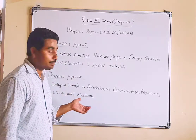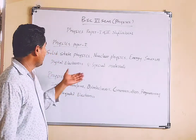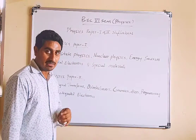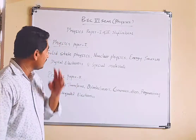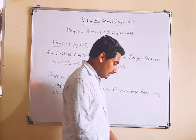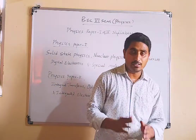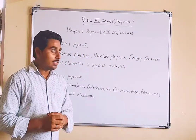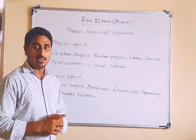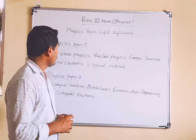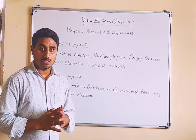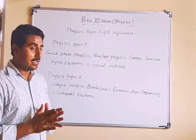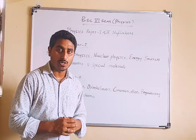For both Paper 1 and Paper 2, the theory component is 80 marks and internal assessment is 20 marks. There are also practicals for both papers, which will be discussed in the next video. This completes the syllabus overview for BSc 6th Semester Physics.